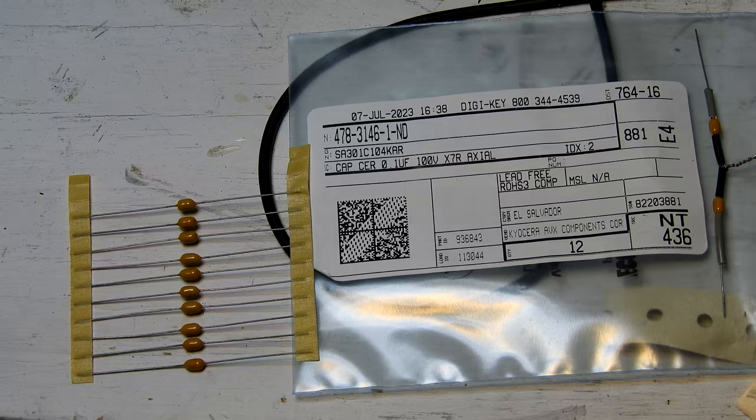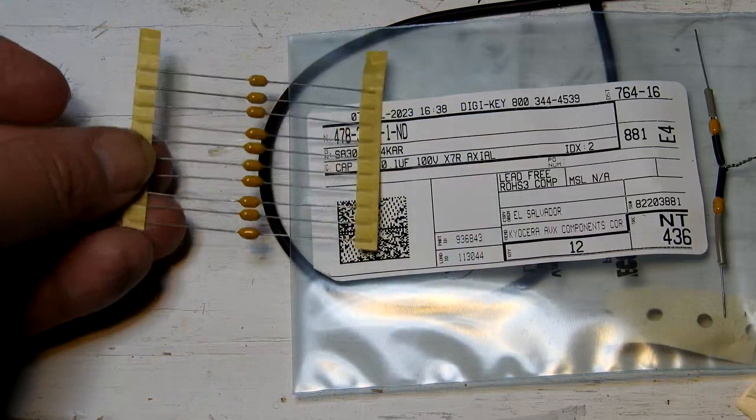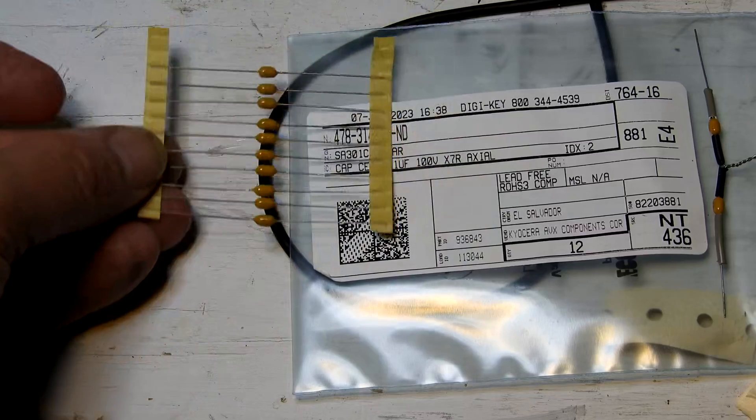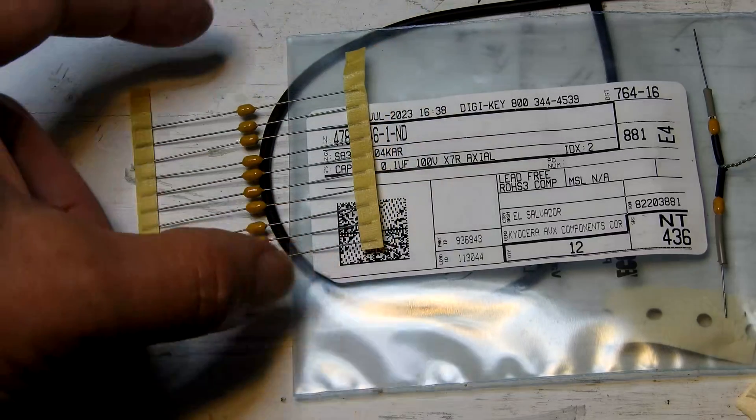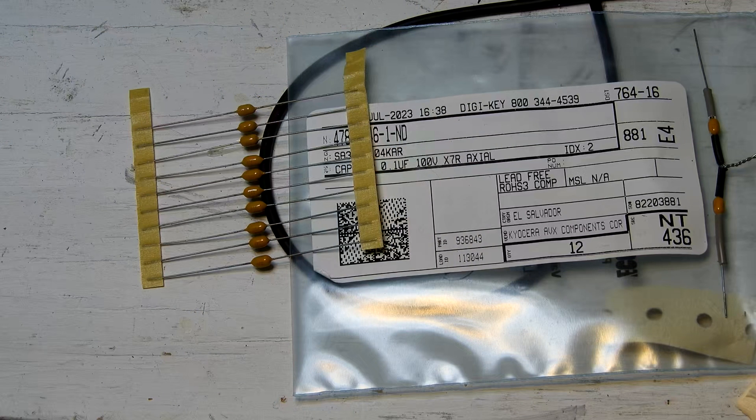So these are the capacitors I bought from Digi-Key. Some ceramics. I bought them because they're small and I needed small. Originally these went across the electrolytics, bigger copies of these, some film ones went across the electrolytics and I didn't include them. I didn't have them handy, didn't really have anything suitable.